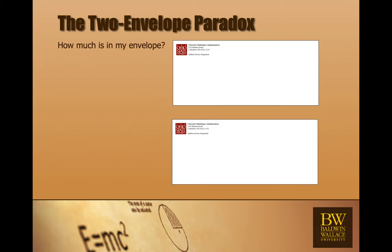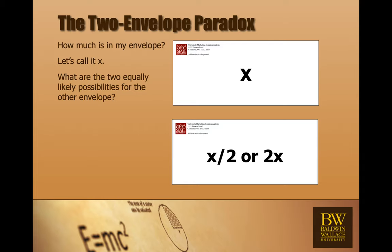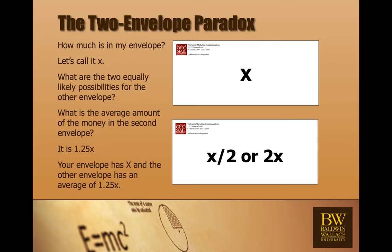We'll just do a theoretical analysis. How much is in your envelope? You don't know what's in there. So, we're going to call it x. There's two equally likely possibilities for the other envelope. It's either half x or 2x. So, what's the average amount of money in the other envelope? If there's x in your envelope, what's the average in the other envelope? It's 1.25x. Your envelope has x. The other envelope has an average of 1.25x. You picked the wrong envelope. You should have picked the other one.